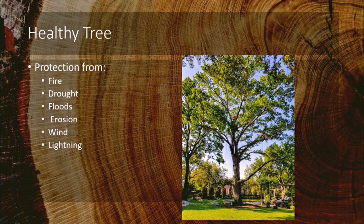Another component of how trees can survive a long time is protection from fire — though in our urban environment we don't worry about wildfires as much as in California. Protection from drought is also key; trees that have lived a long time are often near creeks and floodplains, which is how they survived droughts because they had access to water when other trees didn't. Earlier this decade we lost millions of trees across Texas because of drought.